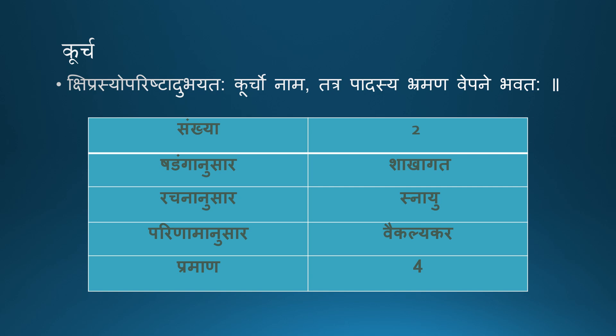The next Marma is Kurcha Marma. Kshiprasya Parishtra — Kurcho Nama — on either side and above the Kshipra Marma there is a Marma Sthana known as Kurcha Marma. The Viddha Lakshita is Padasya Brahmana Vipane Bhavataha — there will be inflammation of the ligaments and tendons leading to inflammation and deformity of the Padha. Sankhya: two in number. Shadang Anusara: Shakha Agatha. Rachan Anusara: Snayu Marma. Parinama: Vipane Karam Marma. Measurement: four Angula.